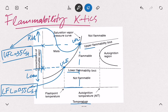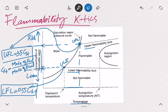The stoichiometric concentration can be calculated from combustion reaction equations. It is the moles of fuel divided by the total moles of fuel plus moles of air.